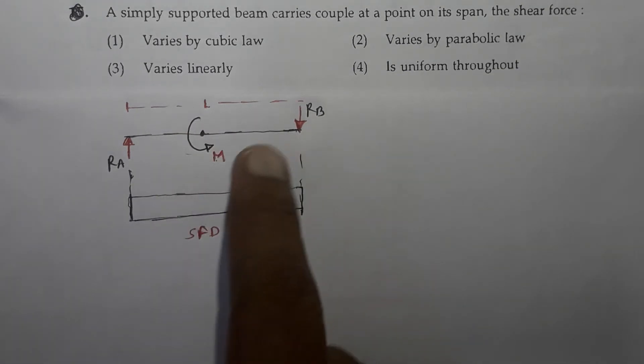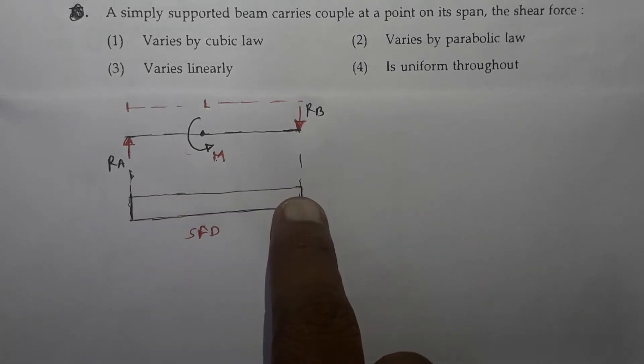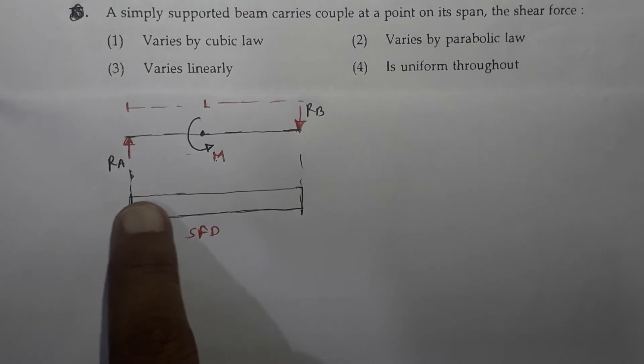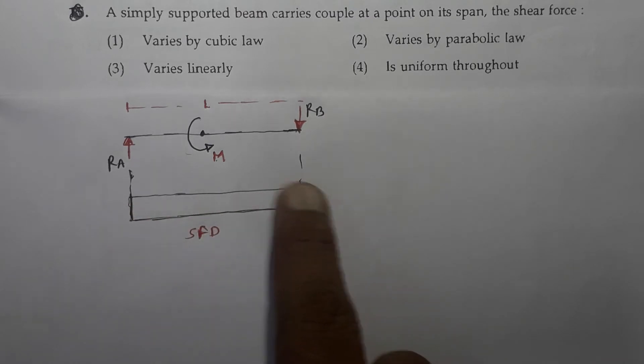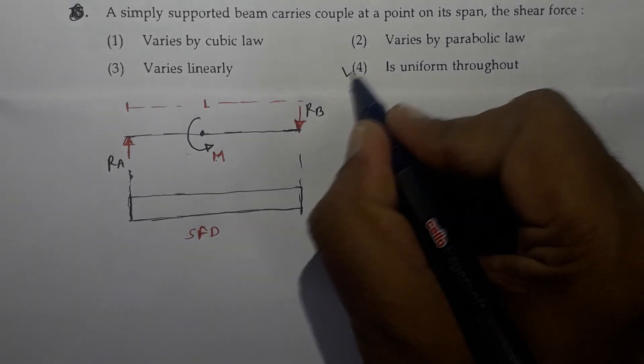Now if shear force diagram for this beam is drawn, it will be like this. And which means that the shear force is uniform throughout. At every cross section, the shear force remains constant. And that is why the correct option is option number 4.